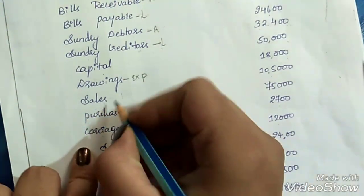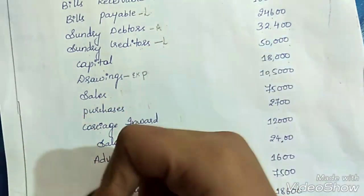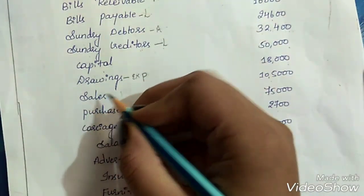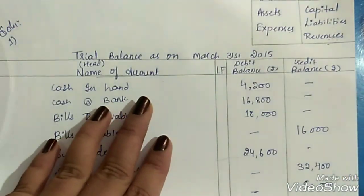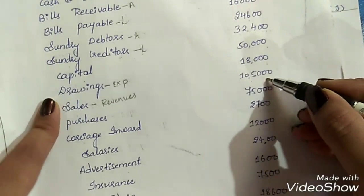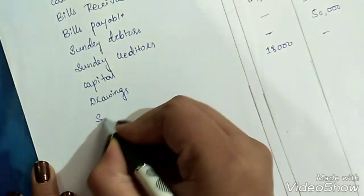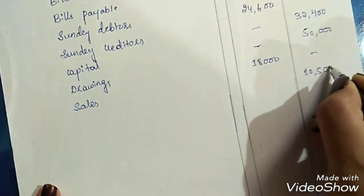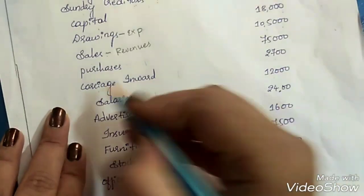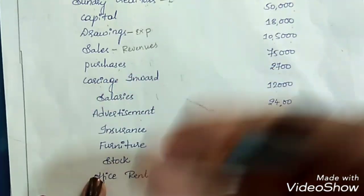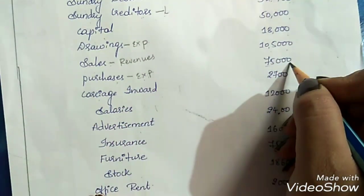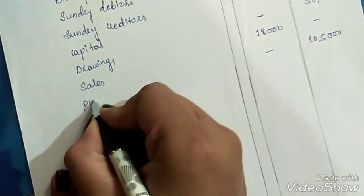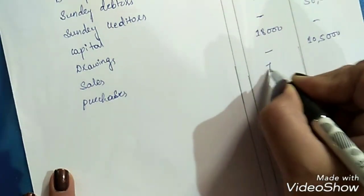Next is sales. When we sell certain goods to customers, in return we receive money, so it is treated as revenue. Sales are treated as revenues, and revenues need to be recorded on the credit side. Amount is Rs. 1,05,000 on the credit side. Next is purchases. When we purchase certain goods, we have to pay cash, so it is treated as an expense. Expenses need to be recorded on the debit side. Purchases, Rs. 75,000 on the debit side.